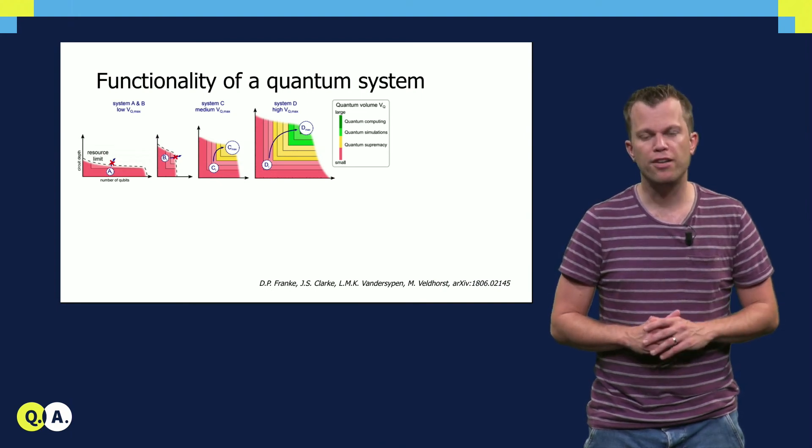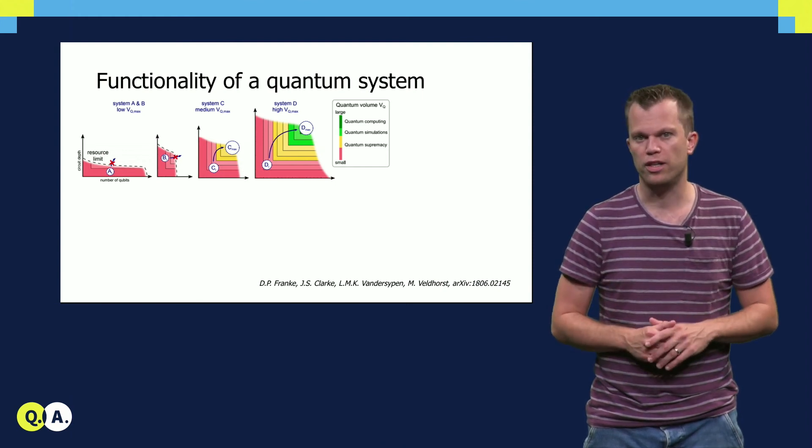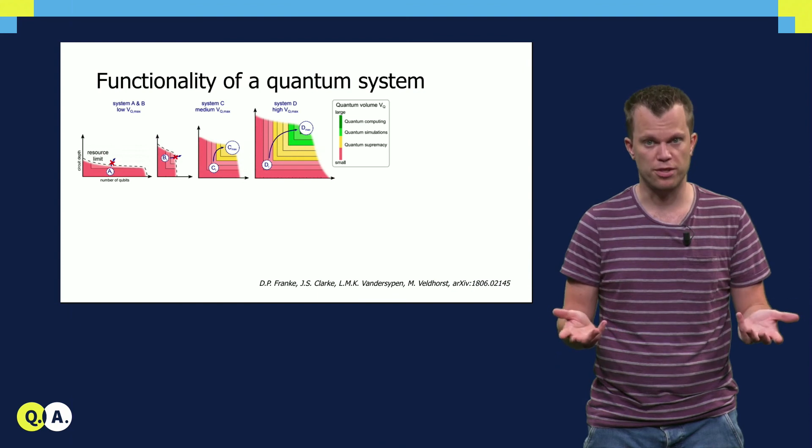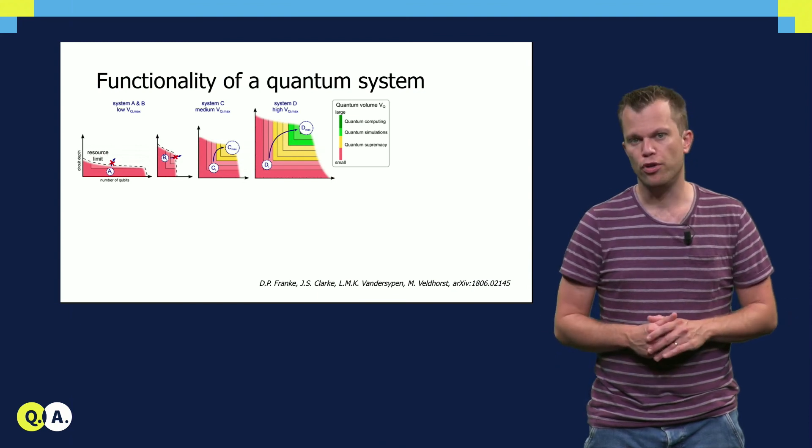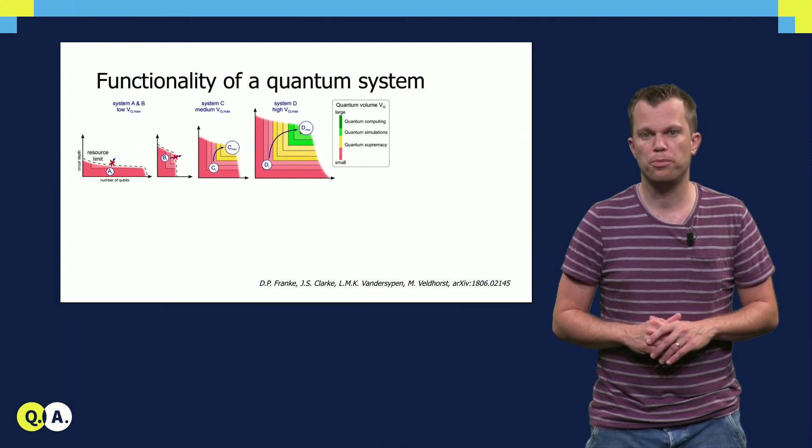A system with only a few qubits is not powerful, even if they are very high fidelity. Likewise, a system containing many qubits of very low quality is also practically useless. The quantum volume takes this into account and is defined as the square of the lowest number of these two quantities.